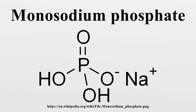Monosodium phosphate, also known as anhydrous monobasic sodium phosphate and sodium dihydrogen phosphate, is an inorganic compound of sodium with dihydrogen phosphate anion, one of many sodium phosphates. It is a common industrial chemical. It exists as an anhydrous salt, as well as mono and dihydrates.